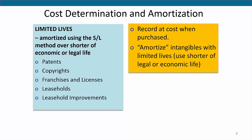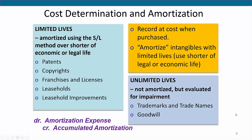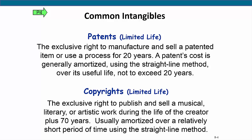If an intangible asset has a limited life, its cost is systematically allocated to expense over its useful estimated life through the process of amortization. Amortization is similar to depreciation, but we only use the straight-line method for intangibles. If an intangible asset has an indefinite life — meaning that no legal, competitive, economic, or other factors limit its useful life — it should not be amortized.